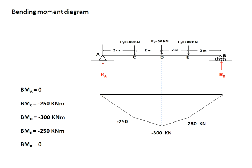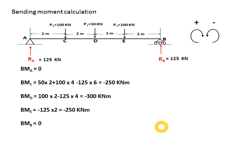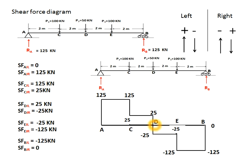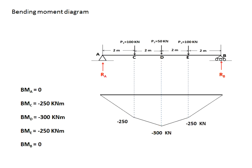Now drawing the bending moment diagram with AB as the datum line: at C it is −250, at D it is −300 (maximum), at E it is −250, and it returns to 0 at B. Note that where the shear force diagram is zero or changes sign, the bending moment has its maximum value — here that maximum is 300 kN·m. With an opposite sign convention, the diagram would appear on the top side with all positive values. Thank you.